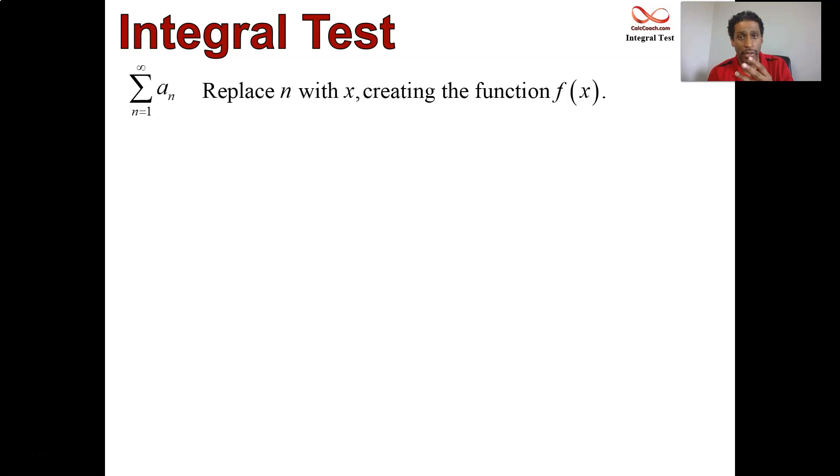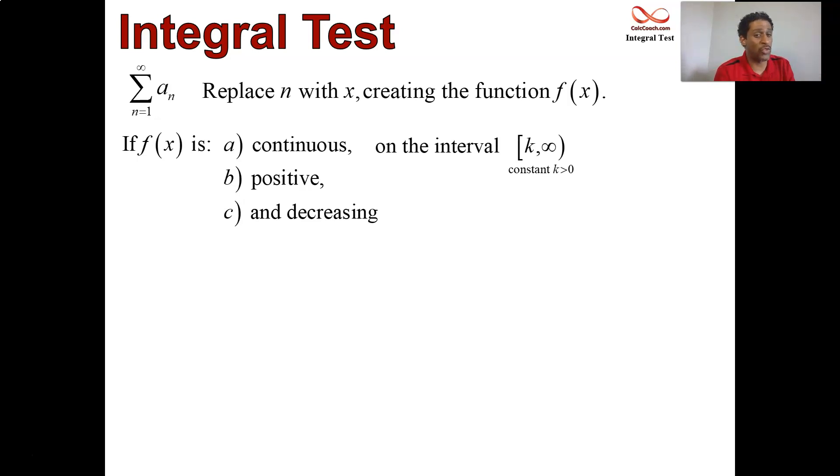Now the function has to satisfy three criteria. Number one is that the function should be continuous. Also, the function should be positive. And thirdly, the function should be decreasing. Now, it might not happen at first. We're going to find out later. A note about this is maybe it doesn't start at n equals one or doesn't have n equals two, but n equals three on forever. We need to have these three properties being true.